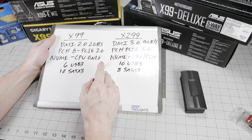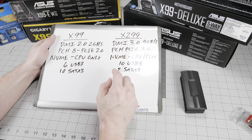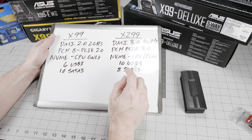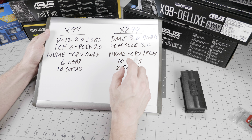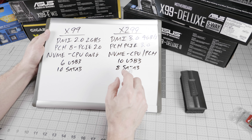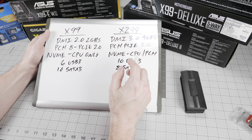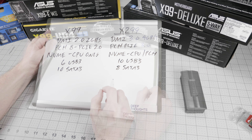I will link my previous Z270 HSIO video down below so you can check it out. It's important to understand how that HSIO allocation works to determine exactly how many devices you can have at the same time and what the limitations are.